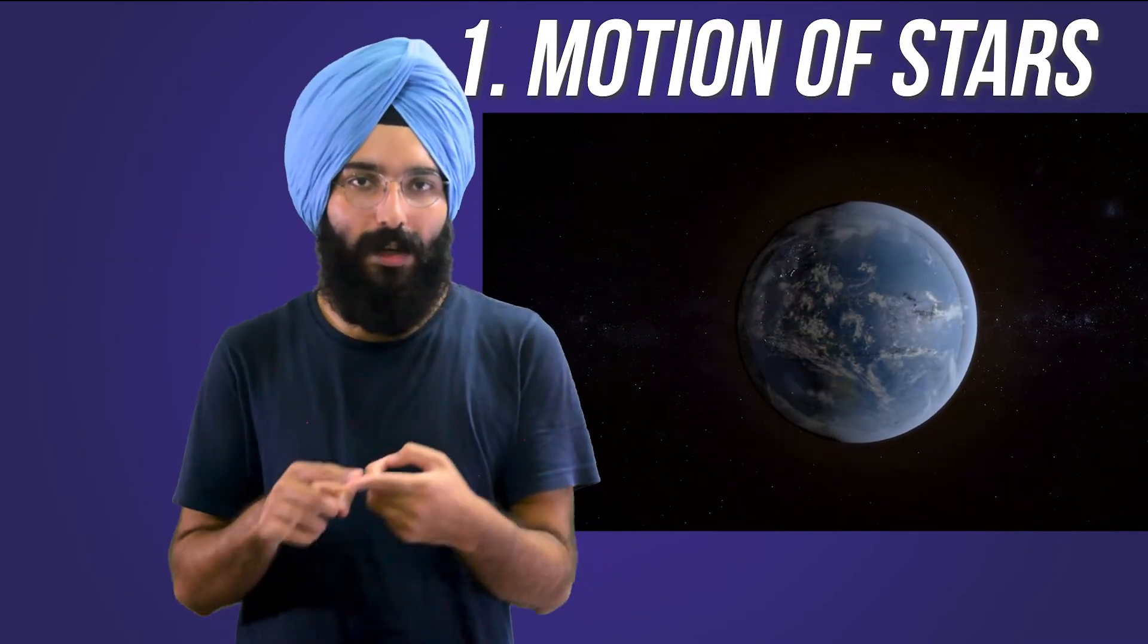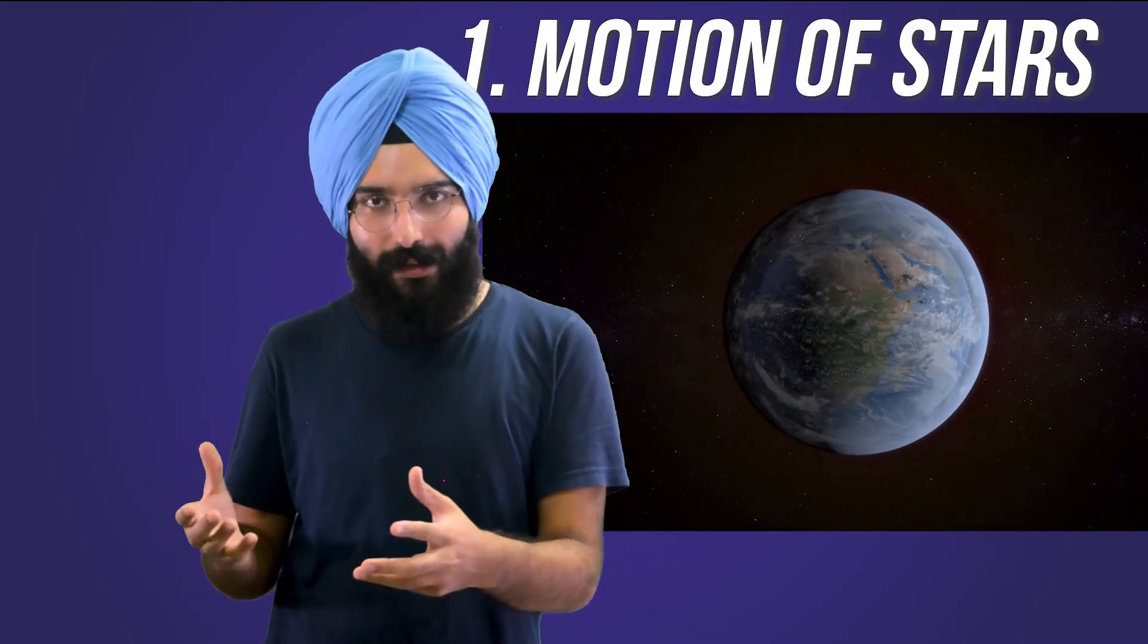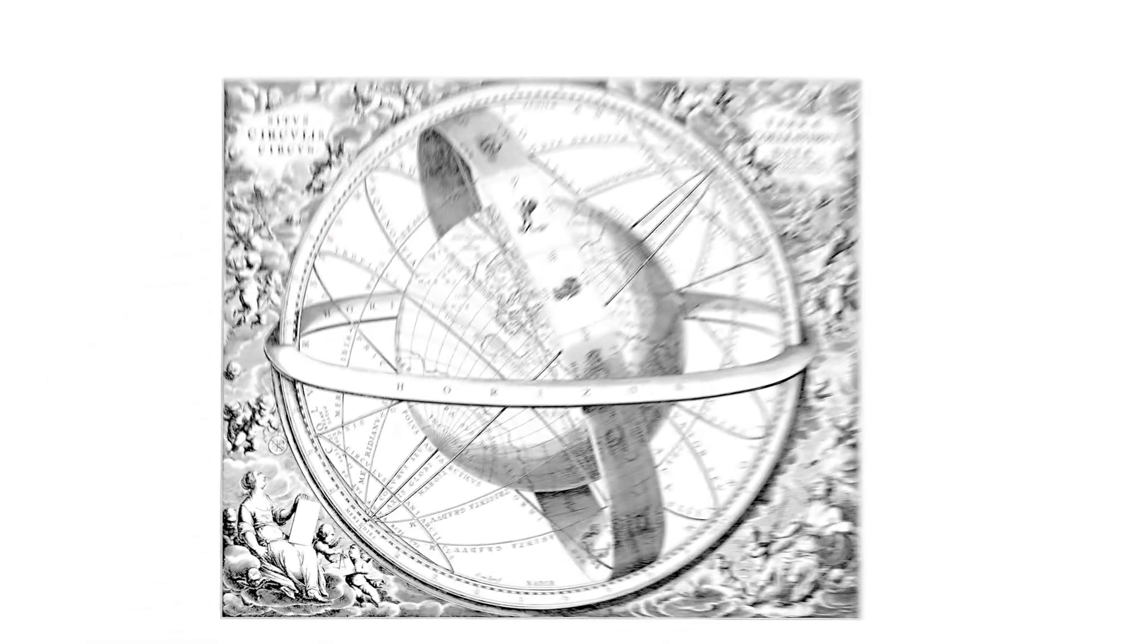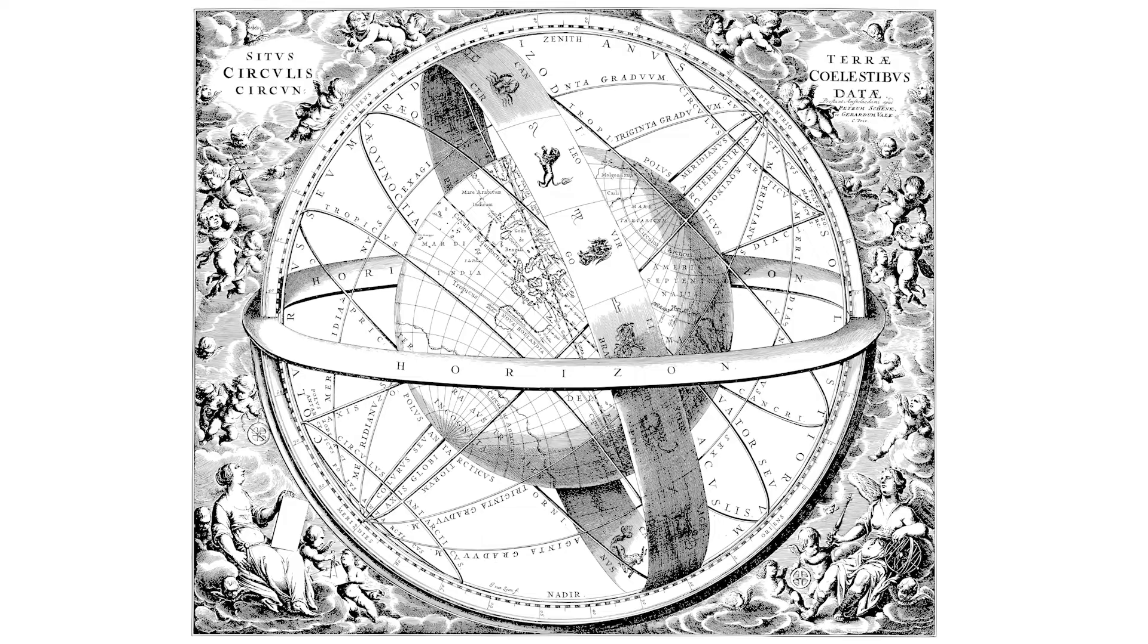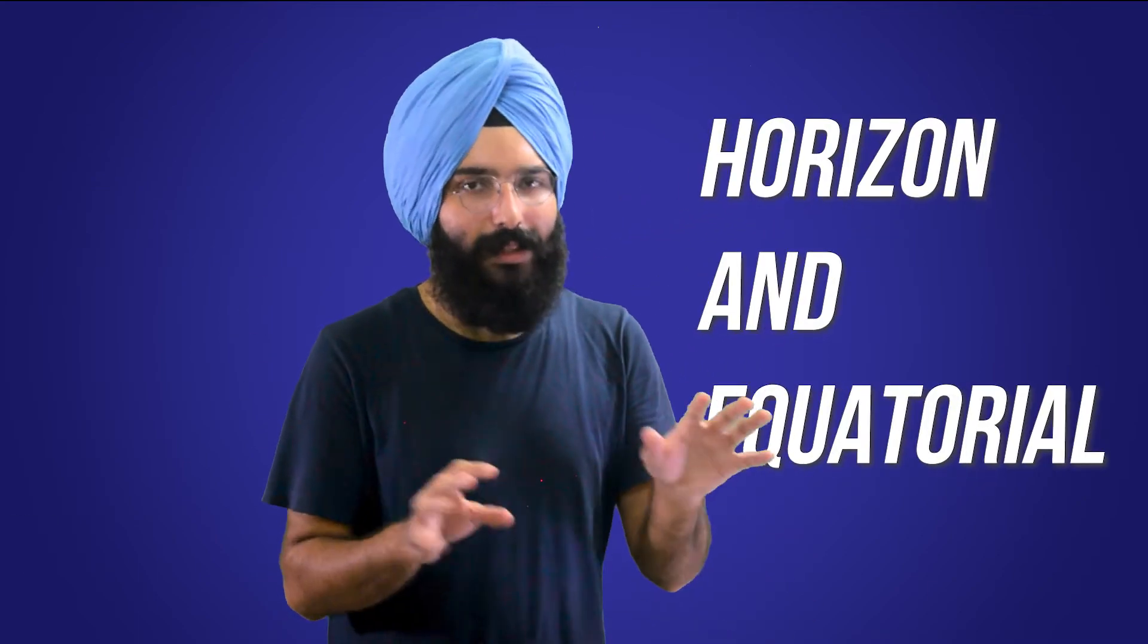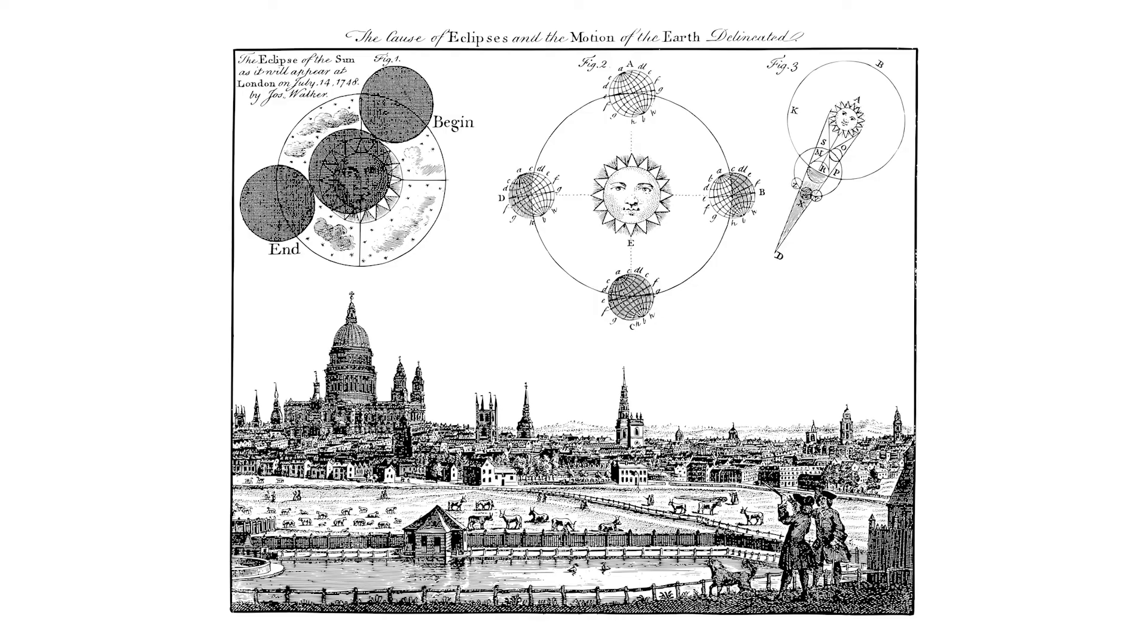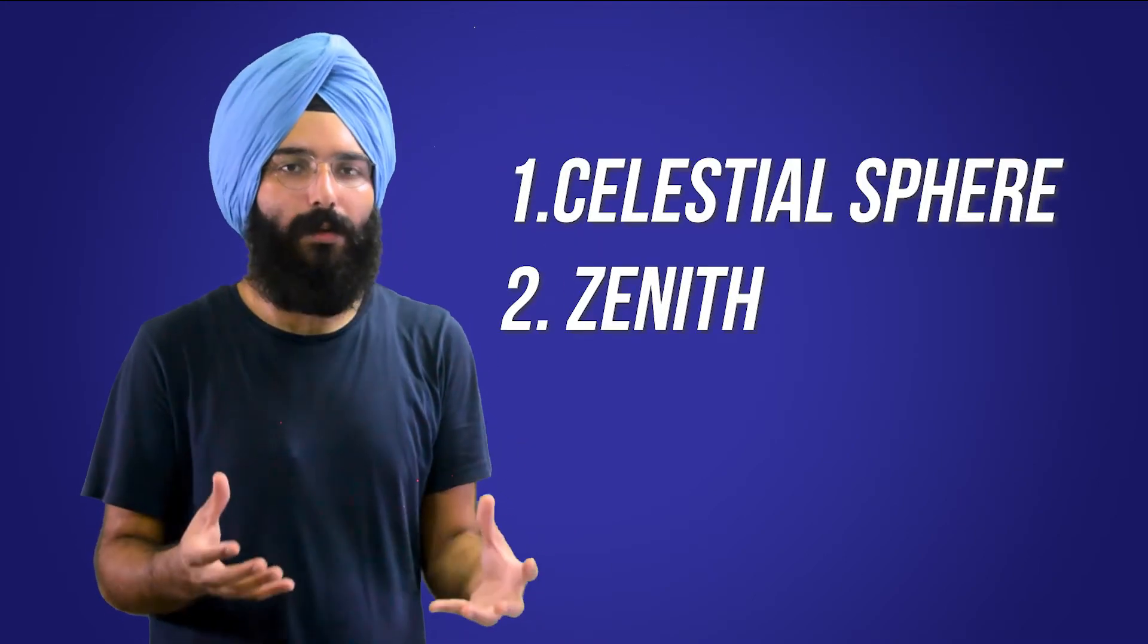However, thankfully, we have a few coordinate systems in astronomy to tackle this problem. But here are the things. First, as you already know, the Earth rotates, so stars move. This coordinate system should accommodate this problem. Second, different positions on Earth will see different sky, which means the star's position would be different for different places on Earth. So how do we fix these? There are basically three types of coordinate systems in astronomy. The first two change with time, and the third one doesn't. I'm going to discuss the first two in this one. But before moving on, you should understand these two things which we're going to use often.